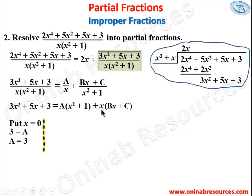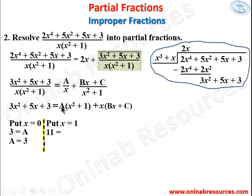Since no other substitution directly eliminates B or C, we form simultaneous equations. Setting x = 1: 3+5+3 = 11, and A(1+1) + 1·(B+C) = 2(3) + B + C = 6 + B + C. So B + C = 5. This is Equation 1.